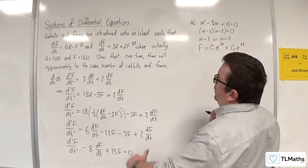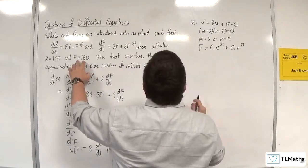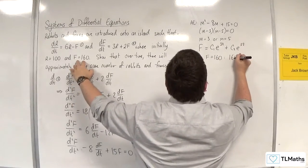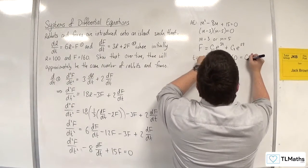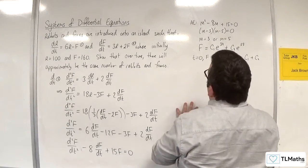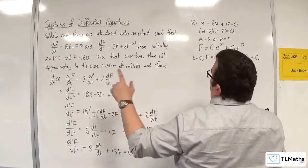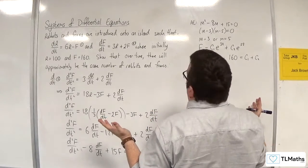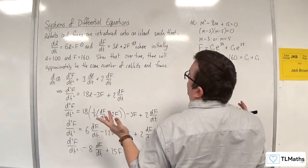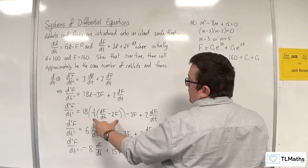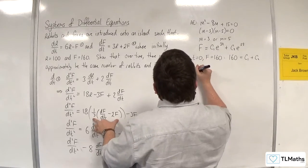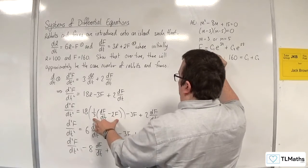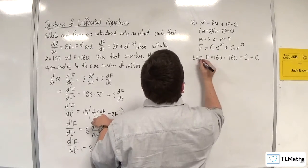Since initially f = 160, we have 160 = c₁ + c₂. To find another equation involving c₁ and c₂, I need to substitute into the expression for r, which I rearranged as r = (1/3)(df/dt) - 2f. So I need to differentiate f first.